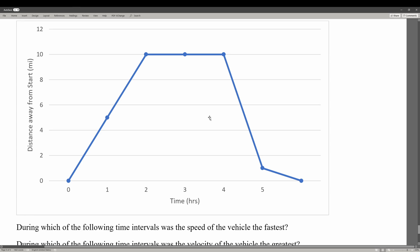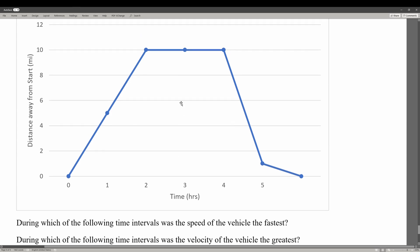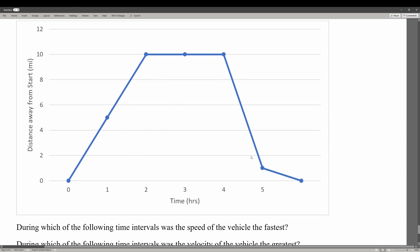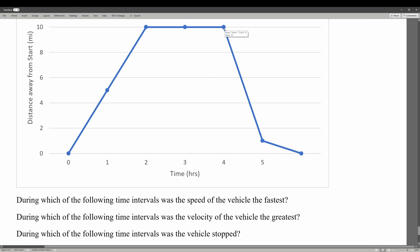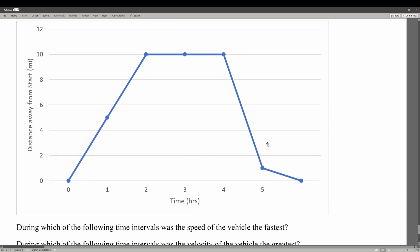Next we have a position versus time graph. During which of the following time intervals was the vehicle the fastest? In this case, we look for slope. From 0 to 1, the slope is 5. From 1 to 2, that's another 5. From 2 to 4, it's 0. And then 4 to 5, we go from 10 back to 1, so that's going to be a slope of negative 9 in terms of magnitude. So the speed would be fastest at this point, 4 to 5 hours, because the magnitude of the slope is greatest.